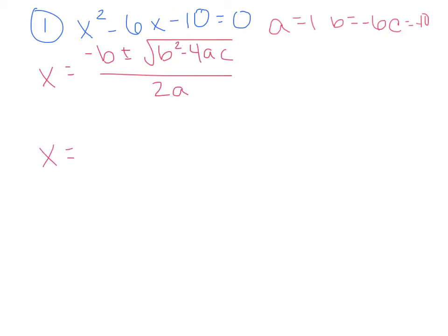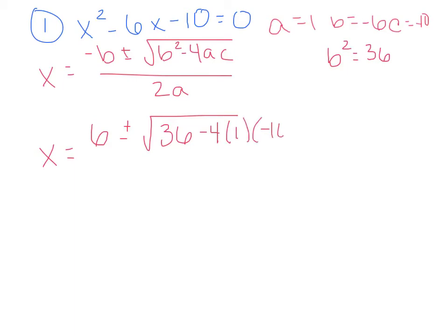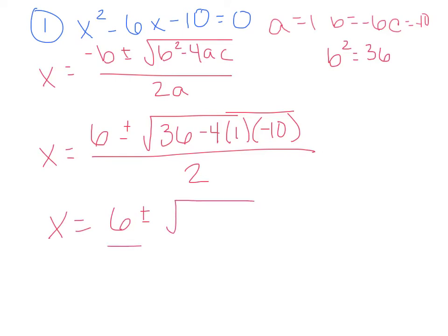So x equals: opposite of negative 6 would be positive 6, plus or minus the square root — b squared, so negative 6 squared is negative 6 times negative 6, which is 36. So you have 36 minus 4 times your a, which is 1, times your c, which is negative 10, all over 2 times a, so 2 times 1 is 2. You should have that written down for every problem. Then you start by calculating the discriminant — x equals 6 plus or minus the square root of something all over 2.